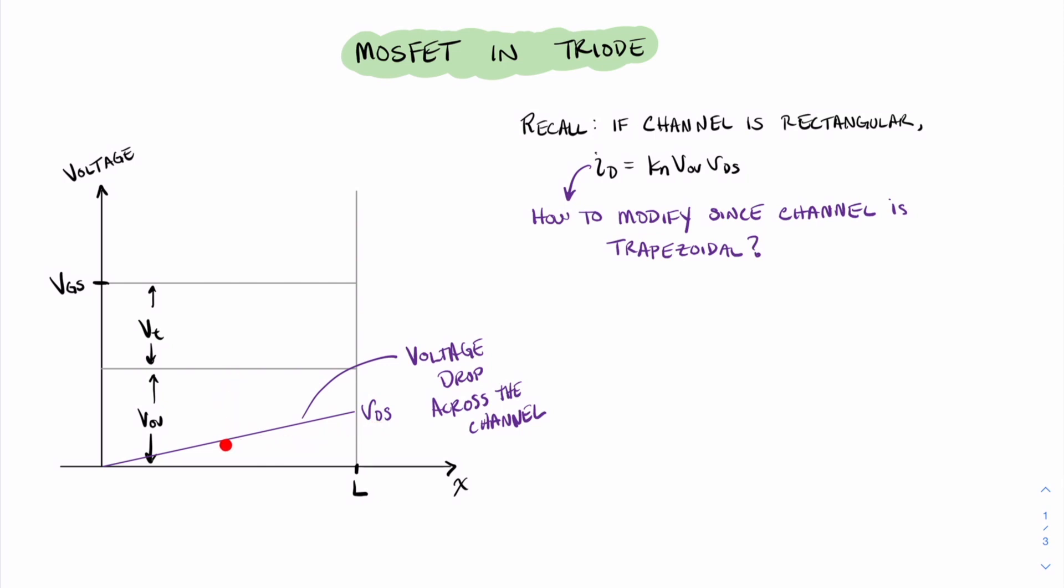So let's look at the values right here in the middle. Right here at the middle, this voltage, since it starts at zero on the left and goes up to VDS on the right, this must be one-half VDS. That means that this other distance right here is going to be VOV minus one-half VDS. And it turns out that this is exactly how we need to modify the VOV over here on the right in order to come up with a new equation for the drain current.